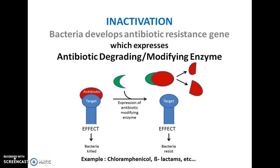Another form of adaptation is inactivation. Bacteria develop antibiotic resistance genes that express proteins serving as antibiotic-degrading or antibiotic-modifying enzymes — for example, beta-lactamase or chloramphenicol acetyltransferase. When bacteria develop resistance against chloramphenicol, they cause acetylation of chloramphenicol. This acetylated chloramphenicol has the least affinity for its target and cannot exert its bactericidal effect.